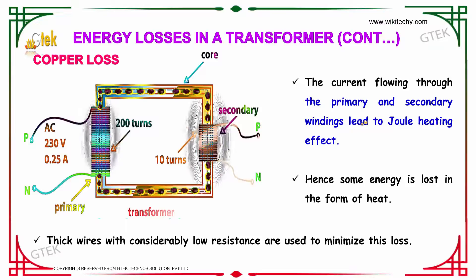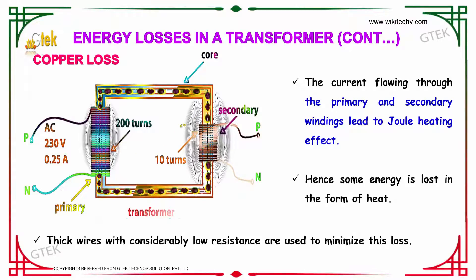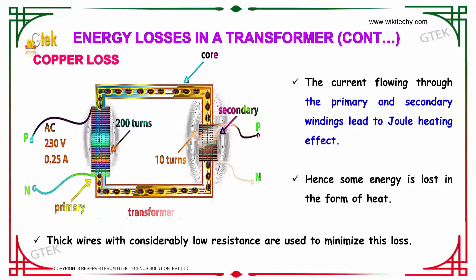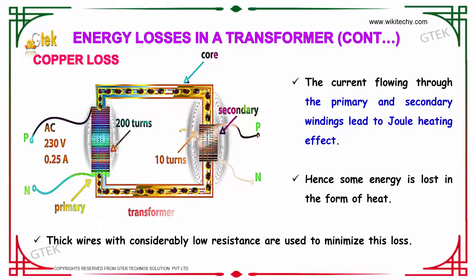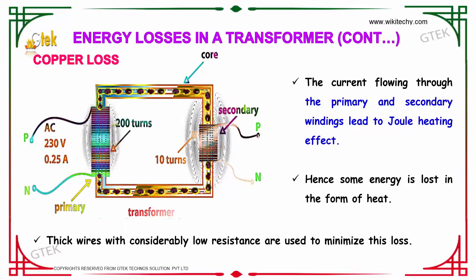We will talk about the copper loss. The current flowing through the primary and secondary windings leads to the Joule heating effect, so there will be heat generated. Hence, some energy is lost in the form of heat. Thick wires with considerably low resistance are used to minimize this loss.